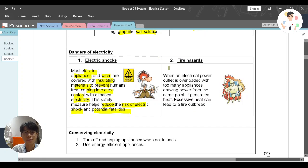Of course, sometimes it might create fire hazard also. So for example, as you can see from this picture, when an electrical power outlet is overloaded with too many appliance, you can see we put a lot of like charge there. But this is very dangerous because you are drawing many power from the same point and it generates heat and this heat can lead into a fire outbreak, which is very, very dangerous. So you need to be very, very careful with that.